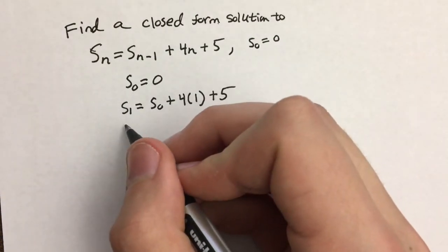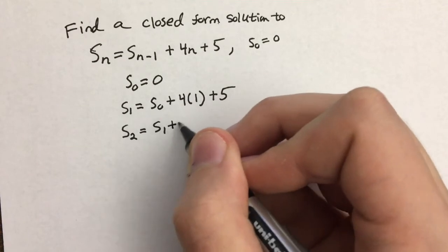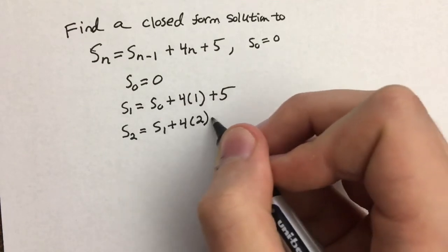So now we're going to move on to the second term which is going to be S sub 1 plus 4 times 2 plus 5.